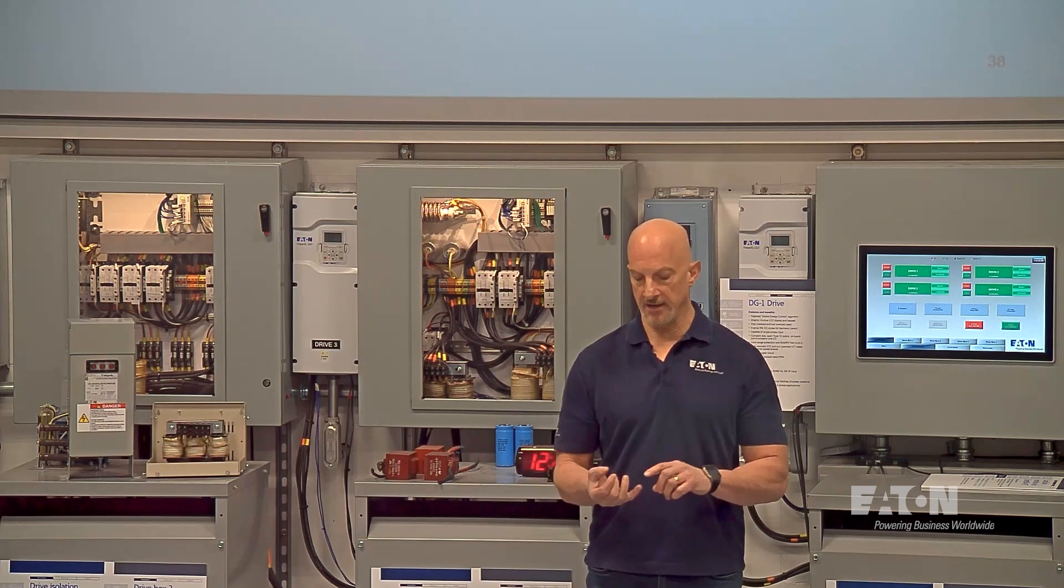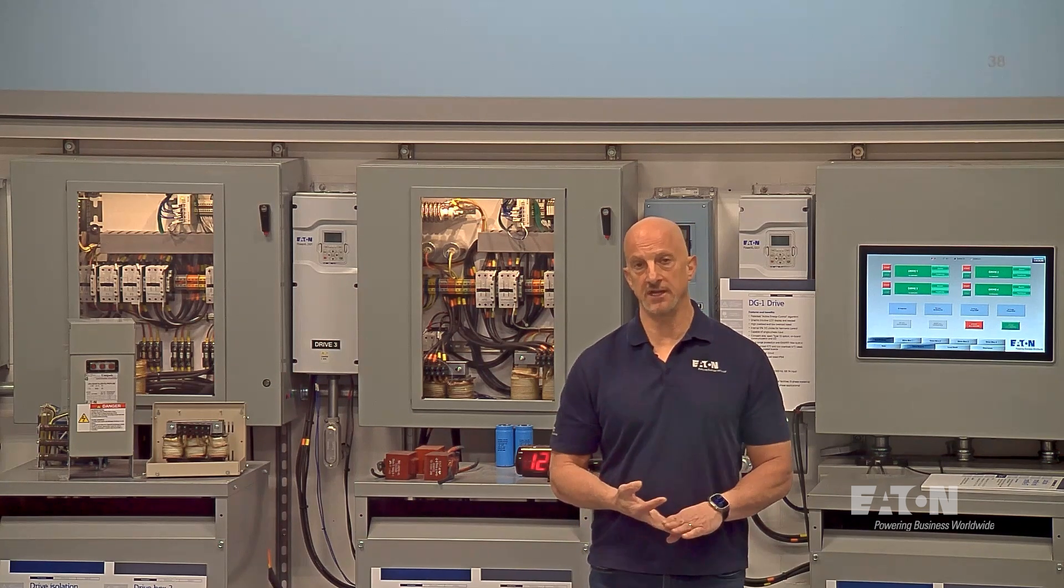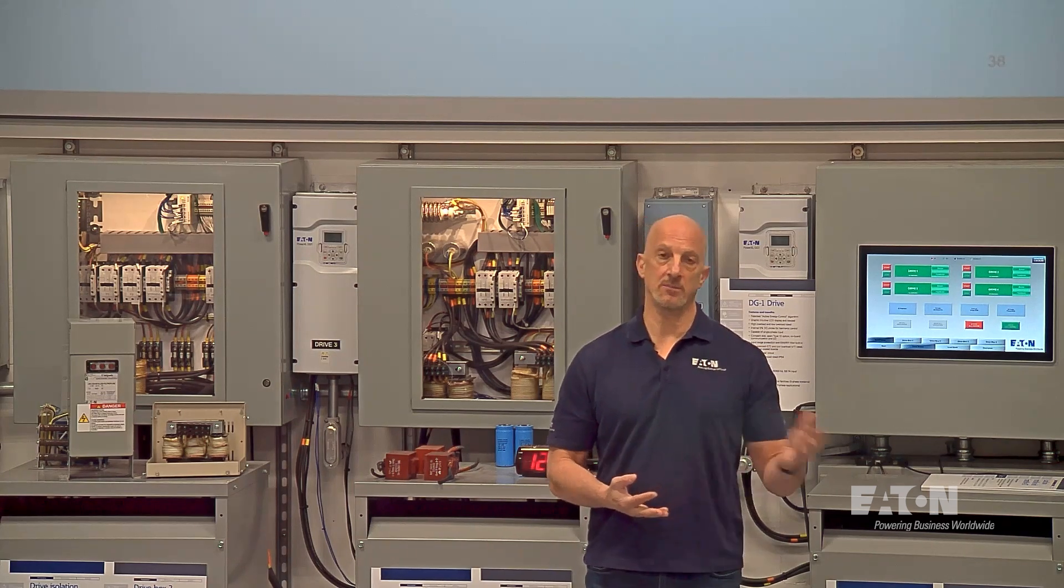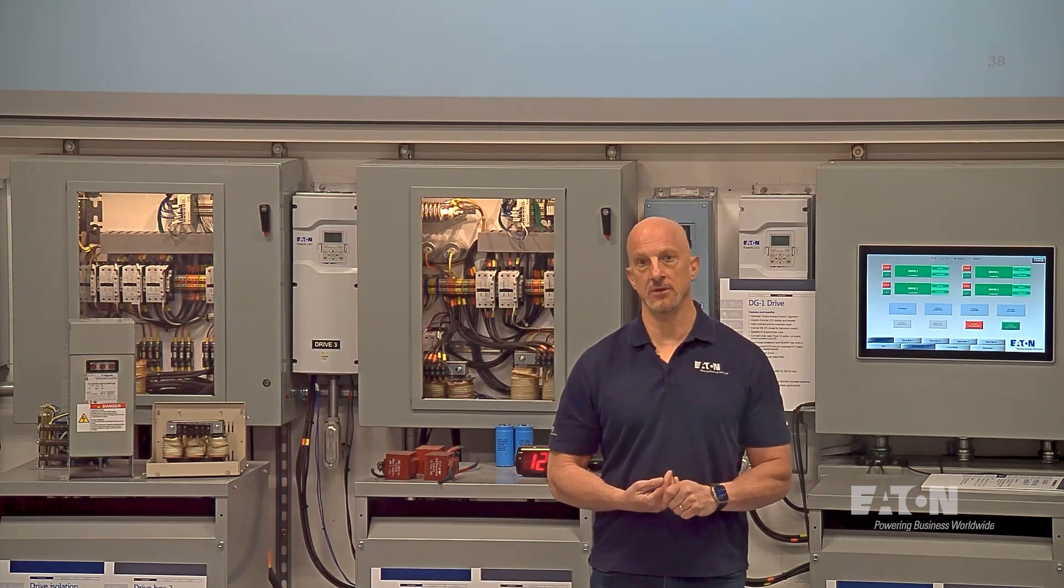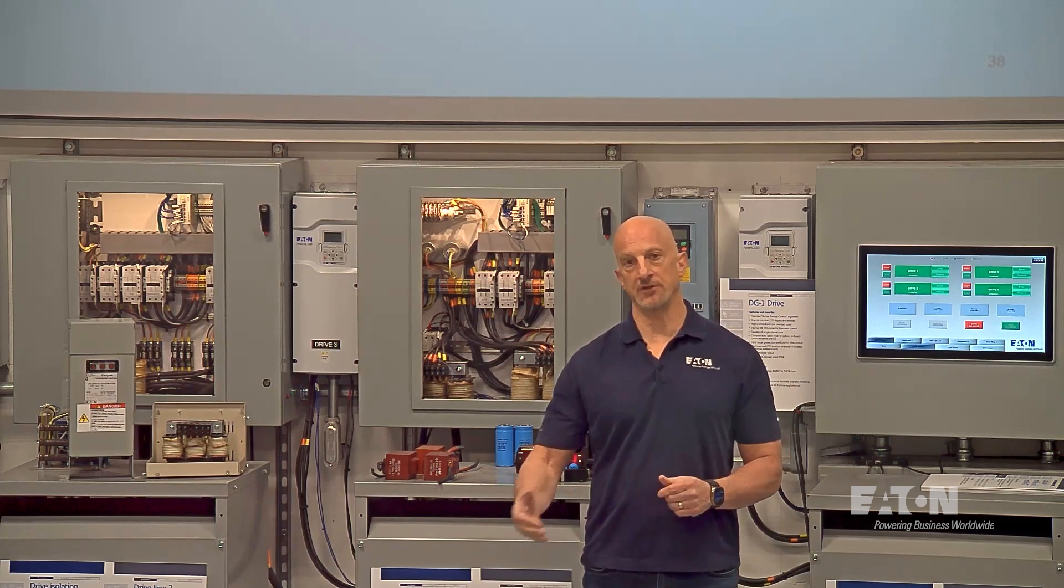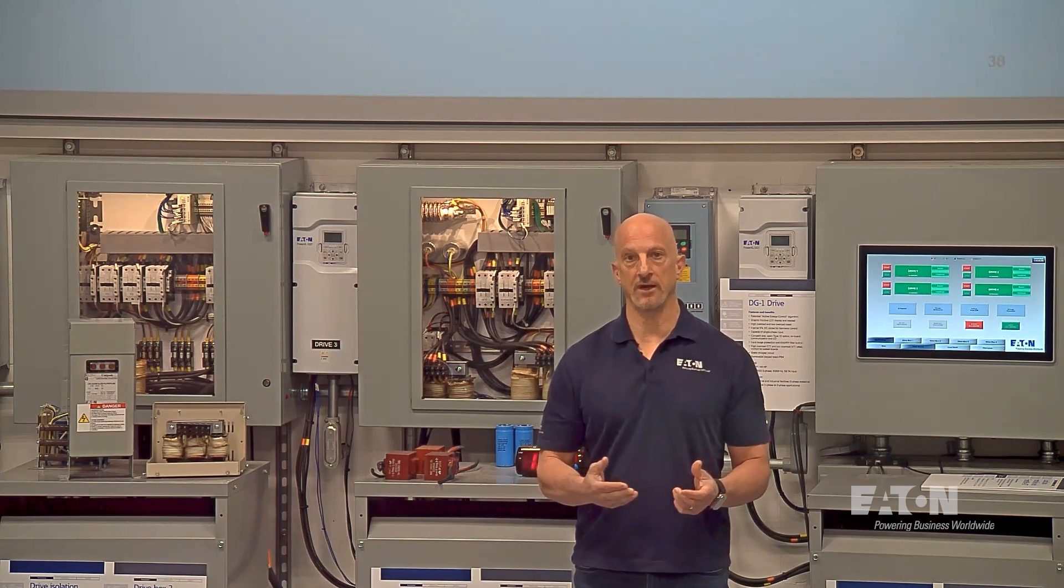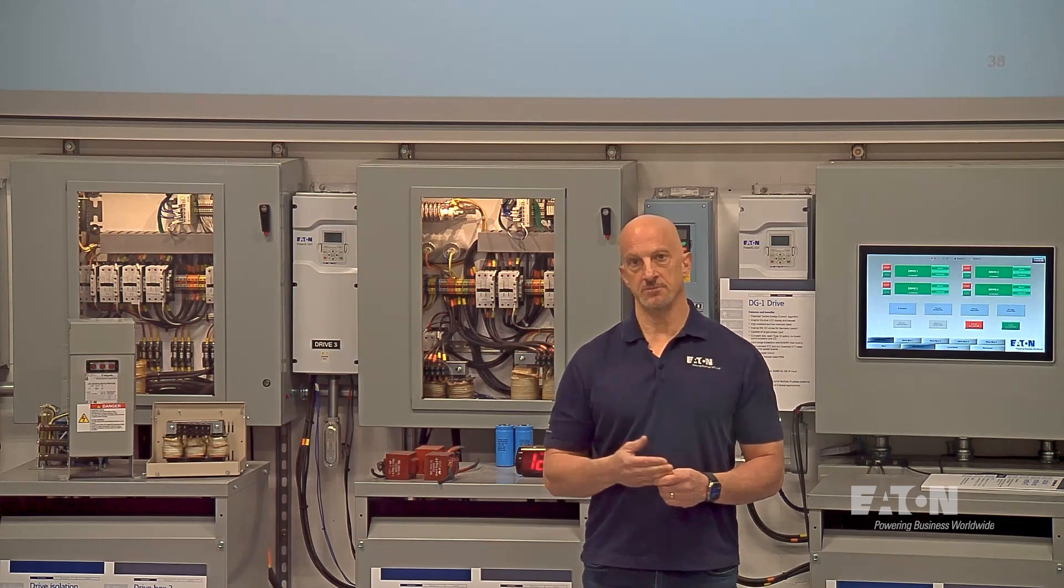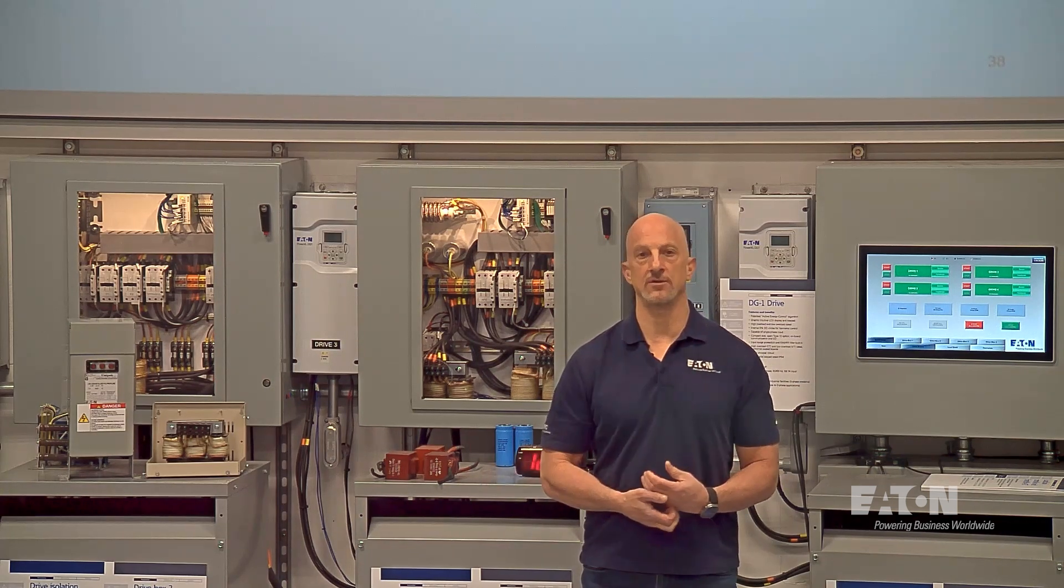If we have three phase loads like VFDs, we're going to have certain harmonics, and we talk about characteristic harmonics in some of the other videos like NP plus or minus one for drives, six pulse drives. So six plus or minus one—fifth and seventh, two times that—eleventh and thirteenth.